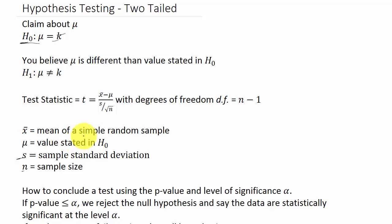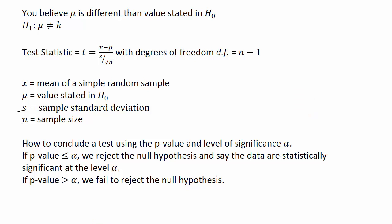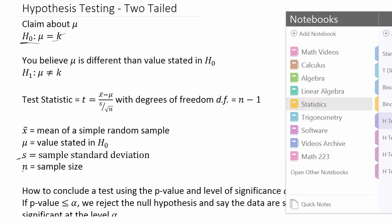If we knew sigma, the test statistic would be a z-score — there are separate videos on that. To conclude a test using the p-value and significance level alpha: if the p-value is less than or equal to alpha, we reject the null hypothesis and say the data are statistically significant at level alpha. If the p-value is greater than alpha, we fail to reject the null hypothesis.